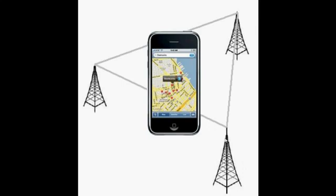Suppose within a 100-meter range of that mobile phone there is Tower A, 200 meters away is Tower B, and 300 meters away is Tower C. The cell phone is programmed to connect to the nearest tower, so the call would be made through the nearest tower. However, the cell phone is also attached to other towers as well.